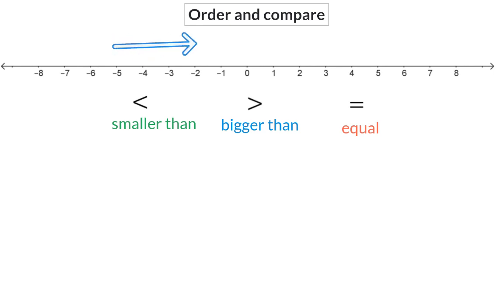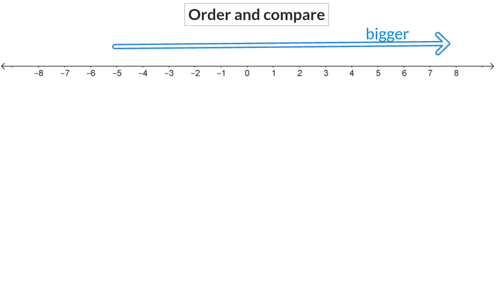As we move to the right on our number line, the values become bigger and bigger. And as you move to the left on the number line, the values become smaller. In the chapter on whole numbers, we already had a look at comparing two positive values.